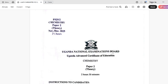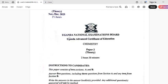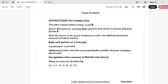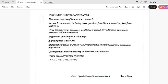So if you look at this, this is paper 2 that they have just done. You can see the code P5252 chemistry paper 2, that is theory, November-December 2025, and the paper is for two and a half hours, those are 230 minutes. So the instructions to the candidates are very clear, I hope you can look at them and see.